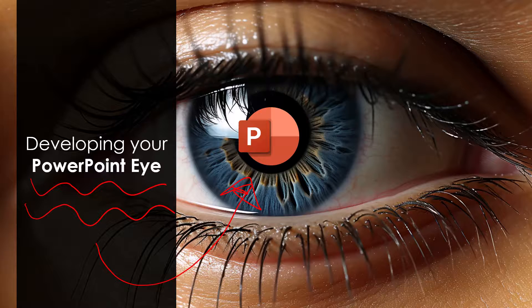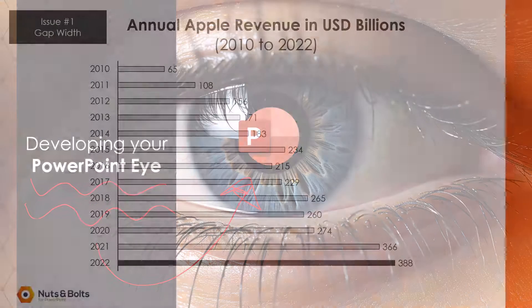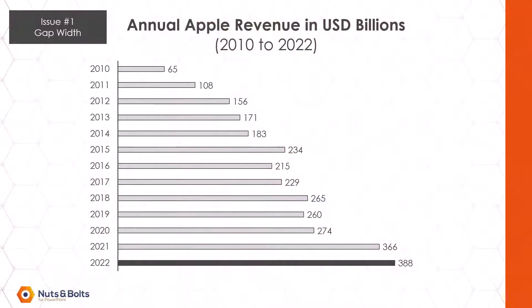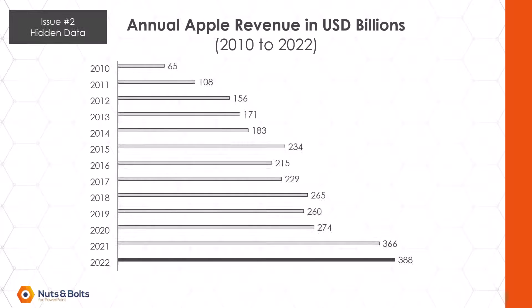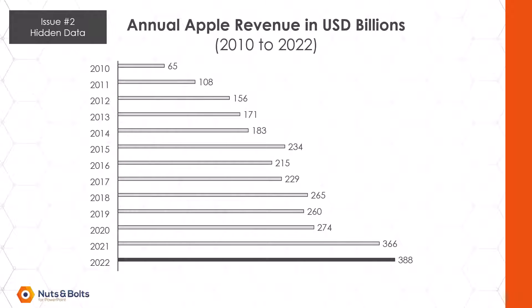Let's quickly take a look at the issues. The first issue is a gap width issue, which you can always tell because your columns or your bars are going to perfectly line up over your years or your categories — which is different than the hidden data issue, or what I'll call the HD issue, where your years or categories don't perfectly line up over your columns or your bars.